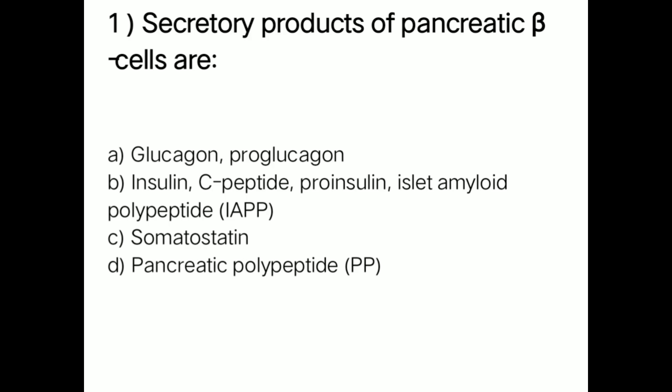The right answer is option B — insulin, C-peptide, proinsulin, islet amyloid polypeptides. These are the secretory products of pancreatic beta cells. Beta cells are a type of islet cells.